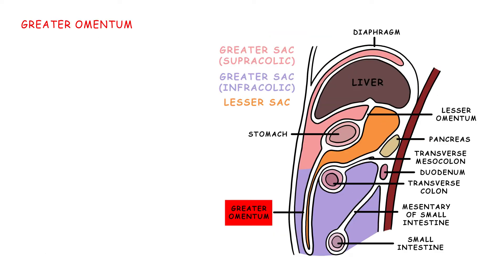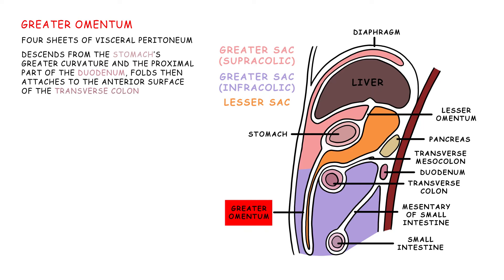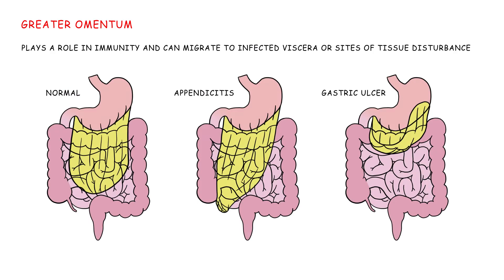The greater omentum is made up of four sheets of visceral peritoneum. Descending from the stomach's greater curvature and the proximal part of the duodenum, it folds and then attaches to the anterior surface of the transverse colon. It plays a role in immunity and can migrate to infected viscera or sites of tissue disturbance.